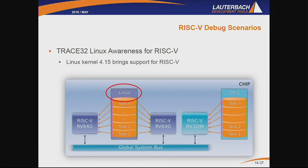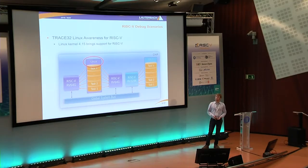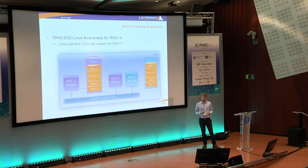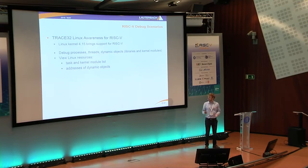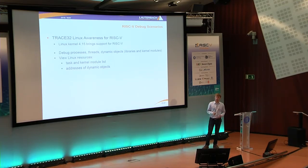Another thing this example shows is Linux debugging. The Linux kernel 4.15 brings support for RISC-V, and so our Trace32 Linux awareness comes into play here. Debugging a complex operating system such as Linux demands a little bit more from a debugger than just general debugging tasks. The debugger needs to be generally aware of the operating system it is debugging. So you want to debug Linux processes, threads, and be aware of dynamic objects such as libraries and kernel modules, view certain lists of tasks and kernel modules, and keep track of addresses of dynamic objects. This is what we are bringing with Trace32 Linux awareness for RISC-V.